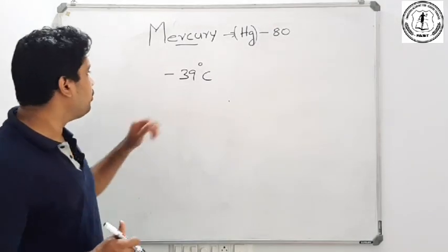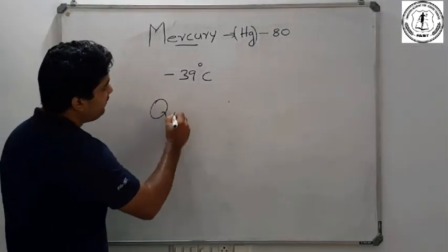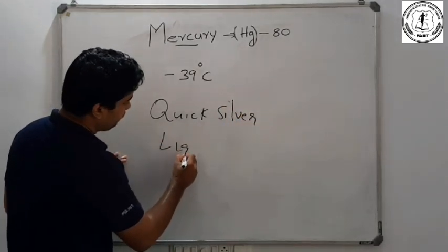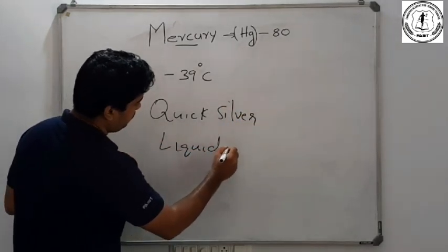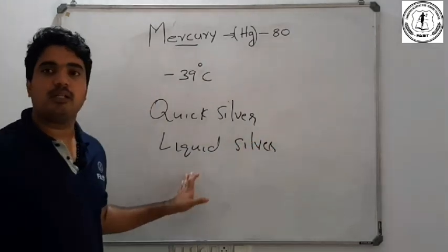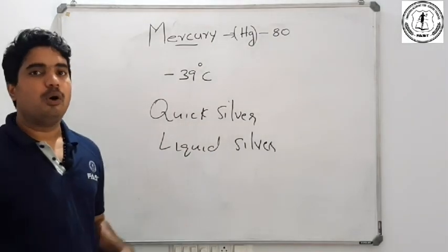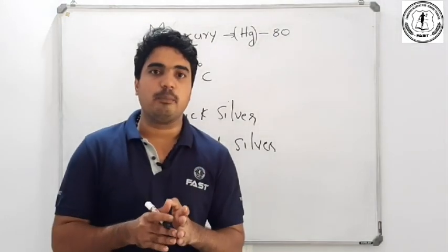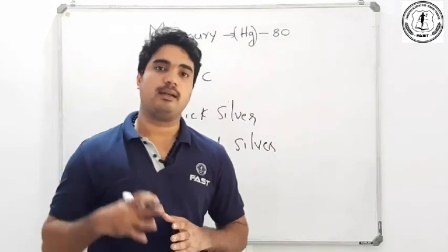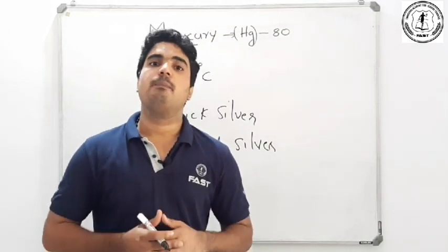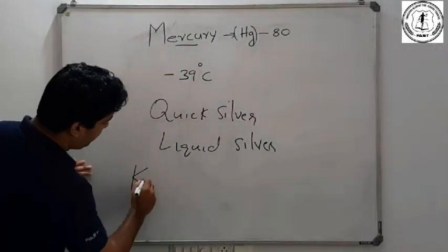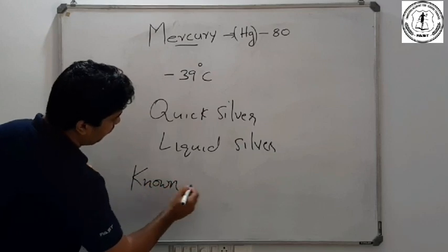The first name of mercury is Quicksilver — also called liquid silver. Mercury is another unique metal. Its melting point is minus 39 degrees Celsius. Mercury was the first non-superconductor identified.